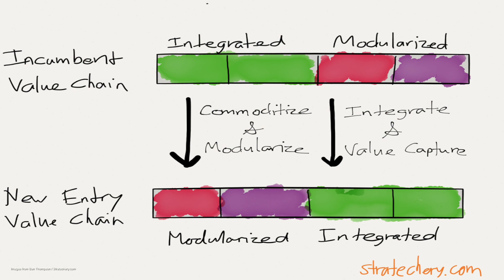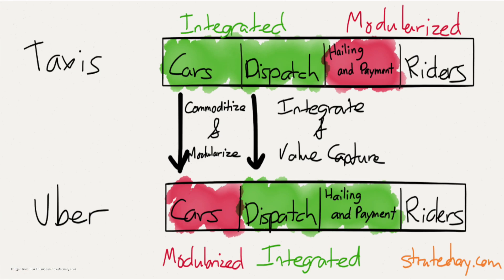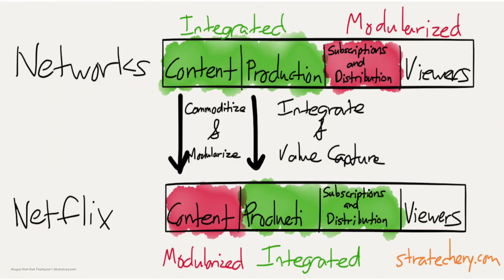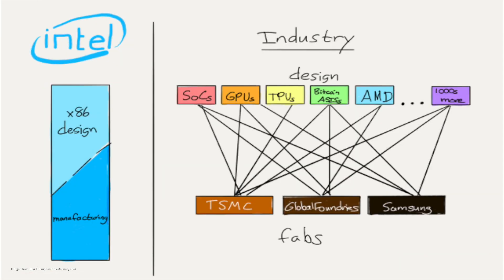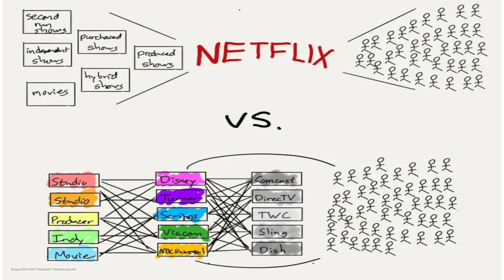Applying our framework, the first step is to understand the competitive landscape, which requires us to understand the value chain that our clients operate in and how the underlying technology will evolve in their industry. As far as the value chain goes, we want to understand who all the different players — manufacturers and suppliers — are who are part of this value chain.